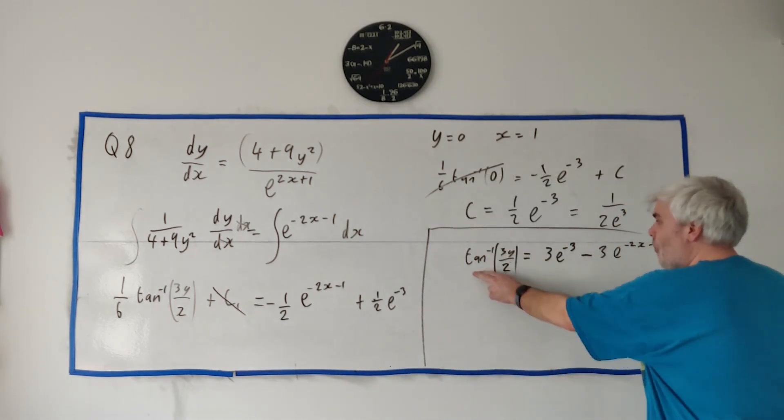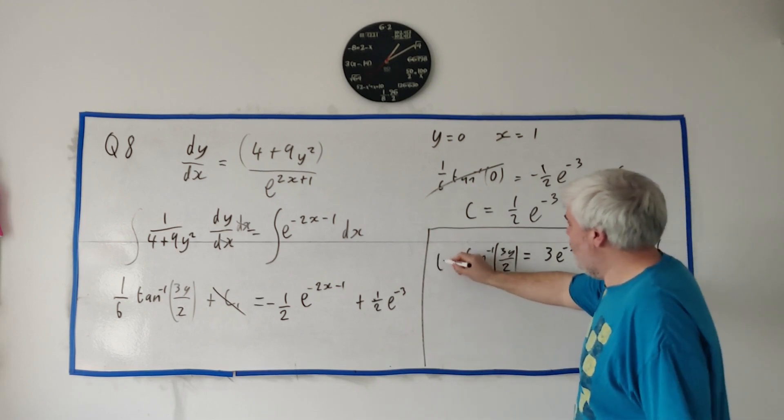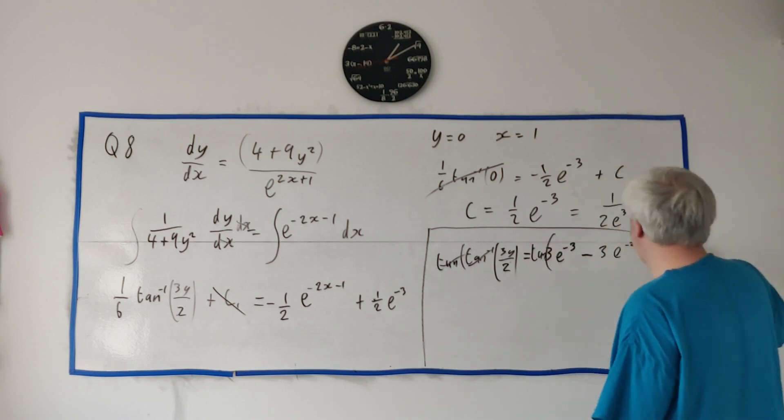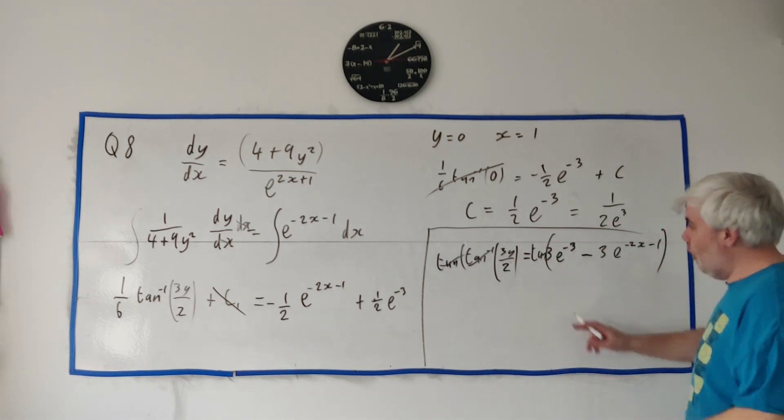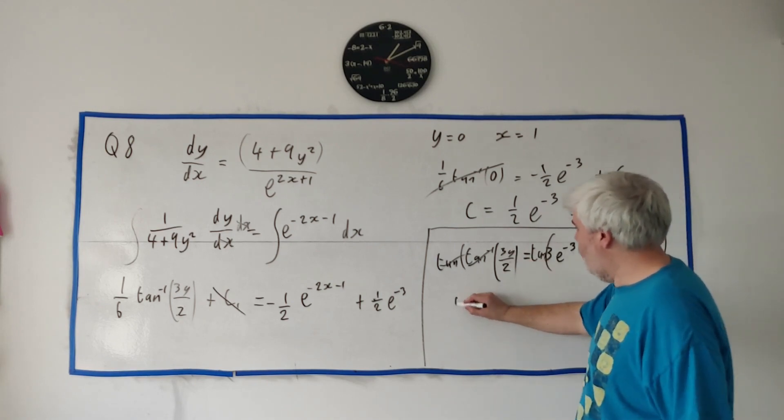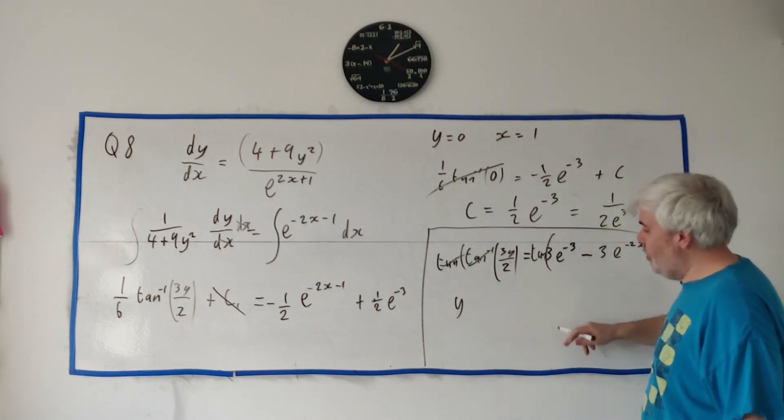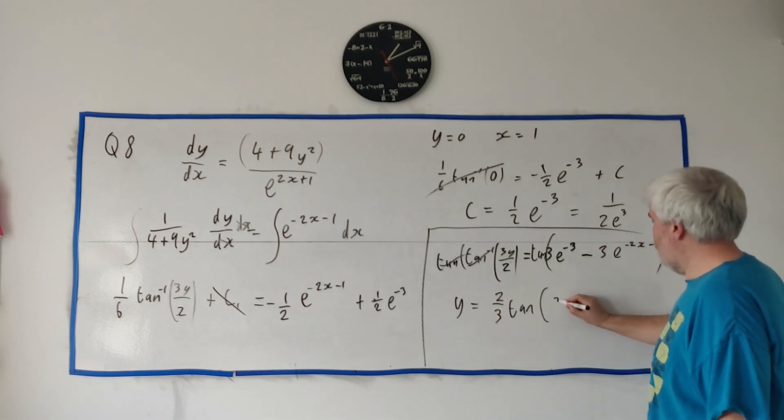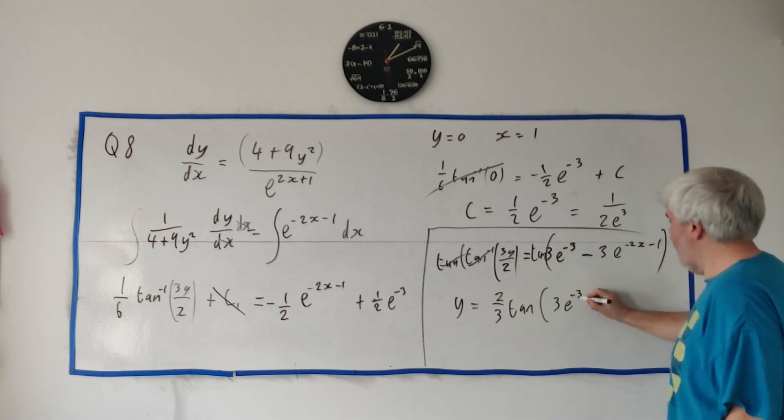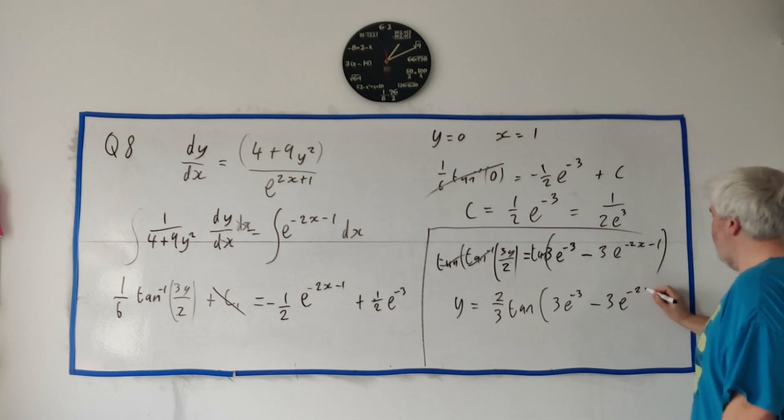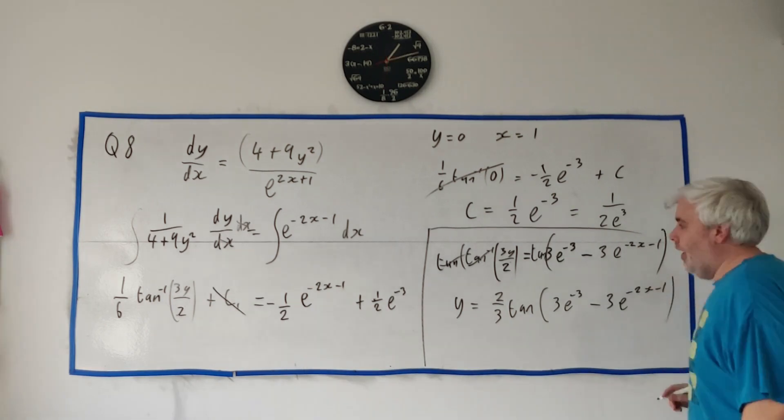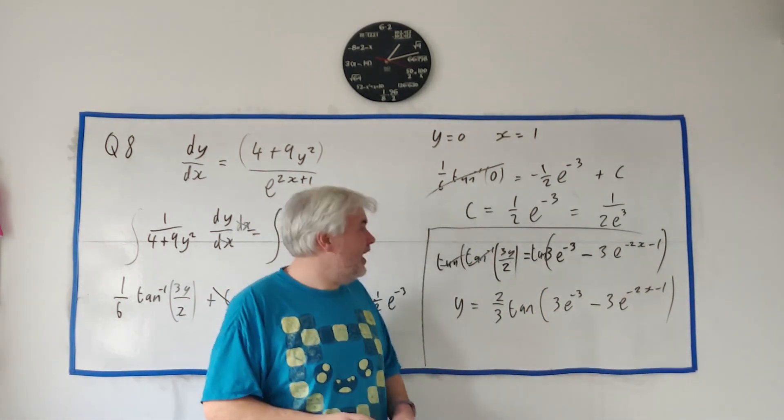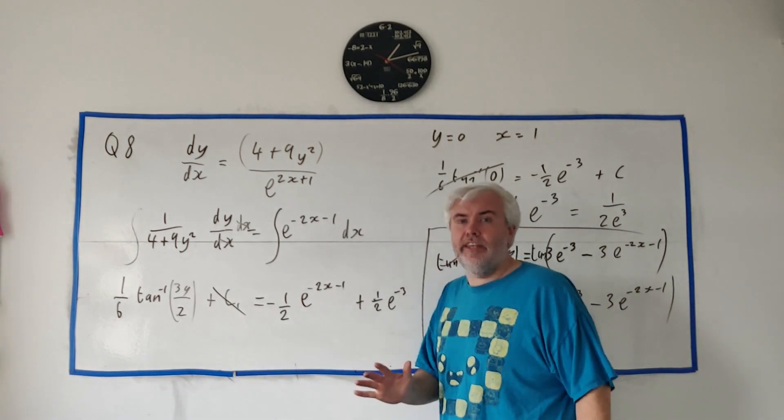I apologize for anybody who's been screaming at the board that there was an x there the whole time. And that should have been a 2. The inverse tan, we can get rid of tan, just tan both sides. Tan the left, that destroys that. Tan goes into the right like that. And we're left with 3y/2. So if we just multiply 2 across, divide 3 across, y will be equal to 2/3 tan(3e^(-3) - 3e^(-2x-1)). And that's the answer to part A.